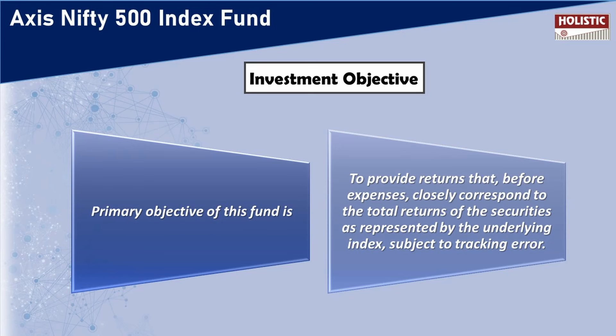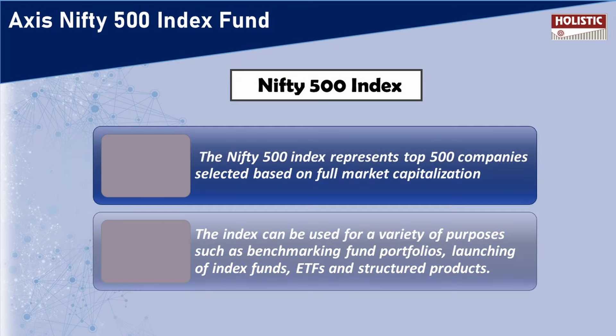The primary objective of this fund is to provide returns that, before expenses, closely correspond to the total returns of the securities as represented by the underlying index, subject to tracking error. That is the investment objective of the Axis Nifty 500 Index Fund. Now, what does the Nifty 500 Index mean?